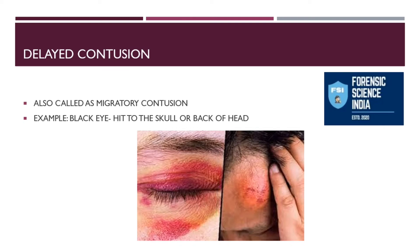The main medical legal significance of studying contusions is to understand four points: firstly, what type of weapon was used and whether it was a blunt force weapon; secondly, how much force was exerted; thirdly, to determine whether it is an antemortem or postmortem injury and the direction and angle of the attack; and fourthly, to determine whether any healing has taken place by studying the age of the wound, helping us know how much time has elapsed since the injury occurred.